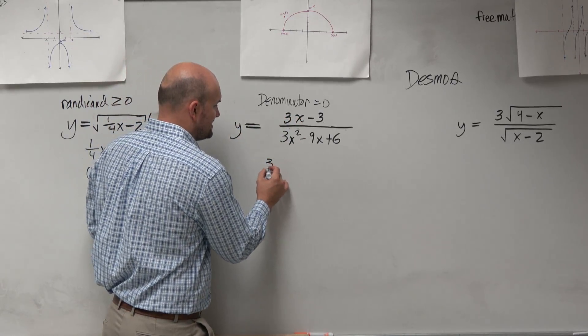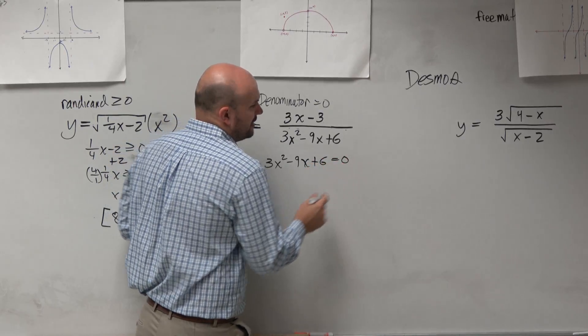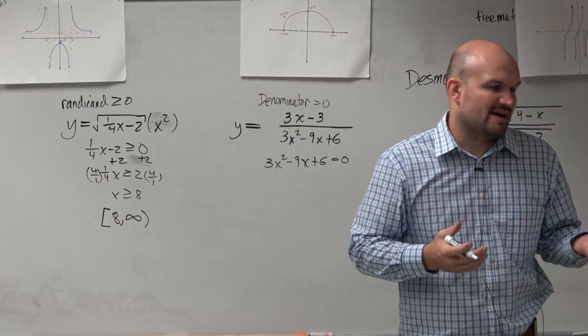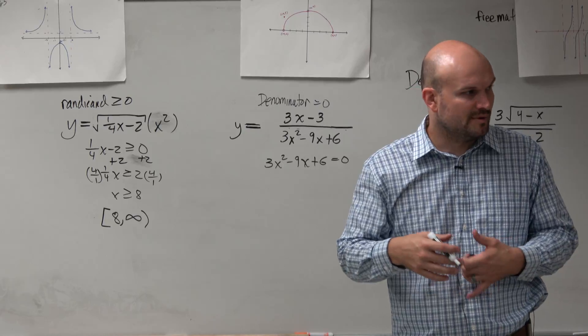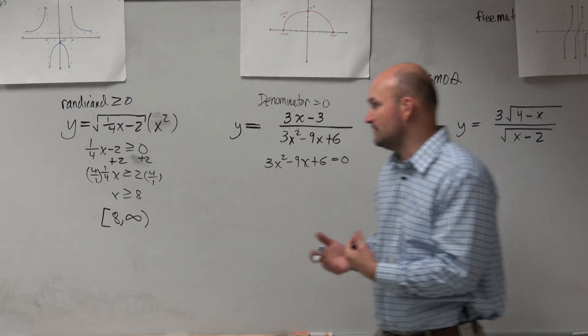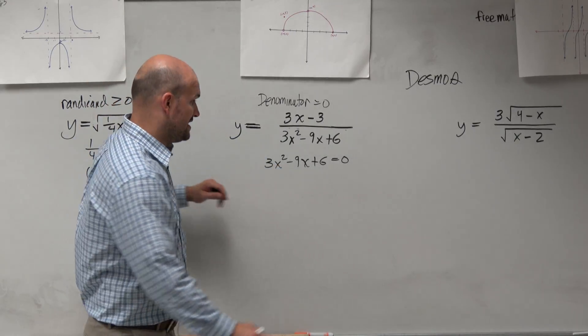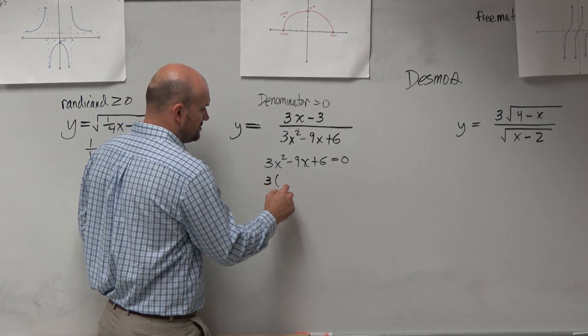So I'm just going to set my denominator equal to 0. And I'm going to have to solve. And I know we haven't talked much about factoring today, so we'll be doing more of that in this class. But let's just kind of go through this. If you need to solve this, first thing you want to do is see if you can factor out any common factor. And you guys can see that they're all divisible by 3.